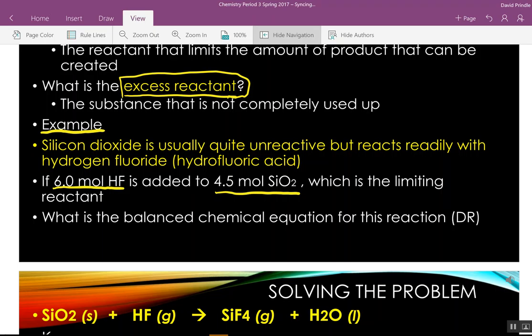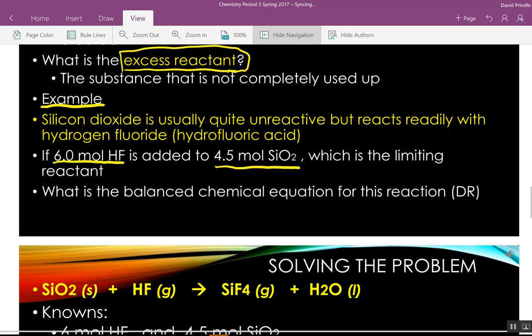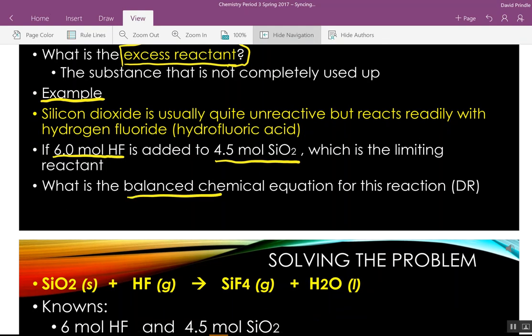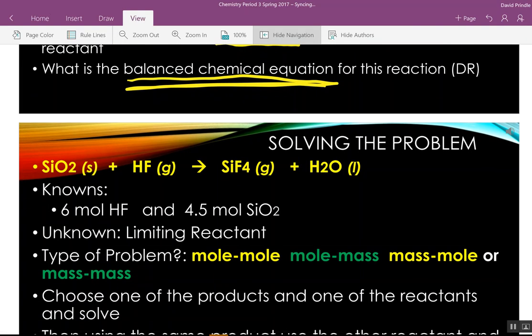So, here's our reaction here. So, we have to have our balanced chemical equation. First thing we always do. So, silicon dioxide reacts with hydrofluoric acid. In the reaction, the fluorine will kick the oxygen off, because that's the reactive part, and be replaced. And so, you get silicon tetrafluoride. And then, you have water left over.